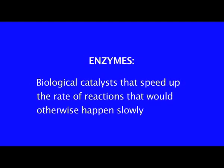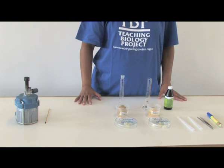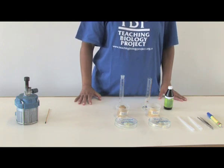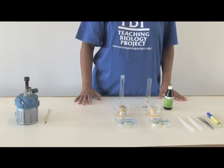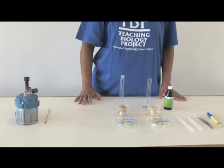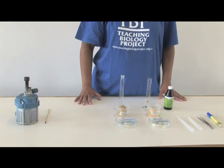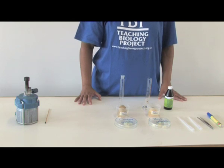Enzymes are biological catalysts that speed up the rate of reactions that would otherwise happen slowly. In this practical, you will study the enzyme found in the cells of many living tissues called catalase. It speeds up the reaction which breaks down hydrogen peroxide into two harmless substances, namely water and oxygen. Hydrogen peroxide is a product of metabolic reactions and is toxic.